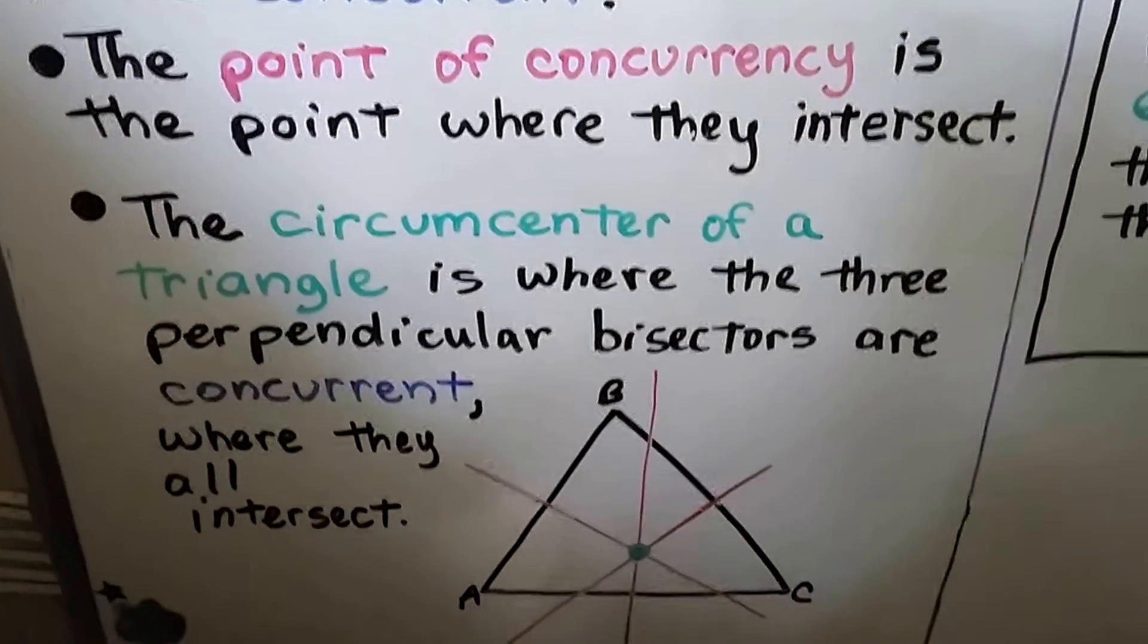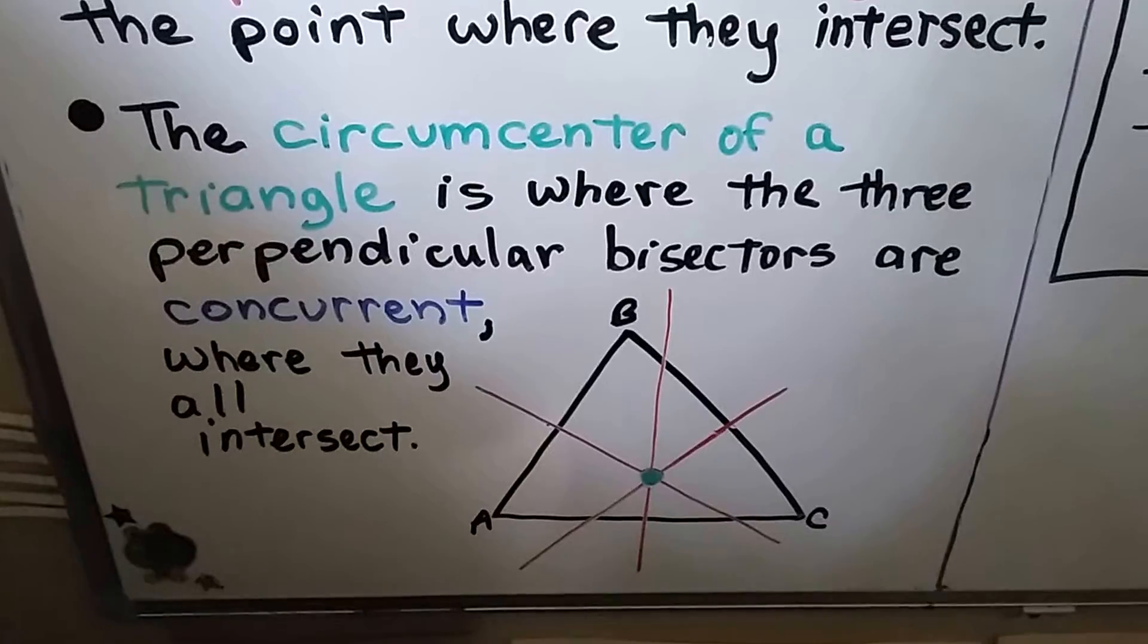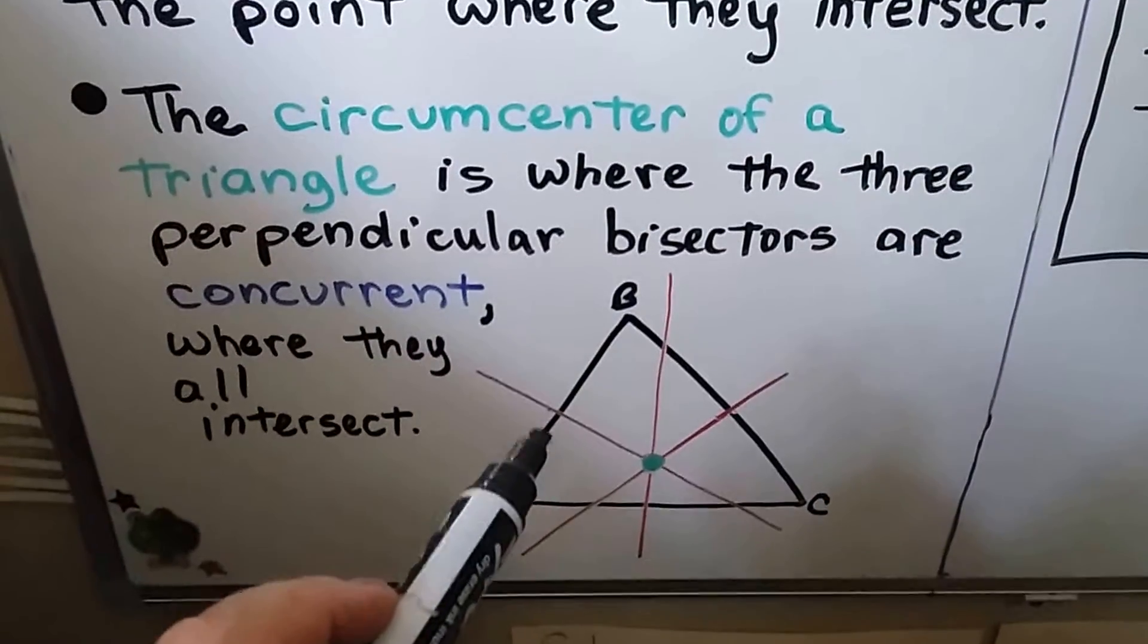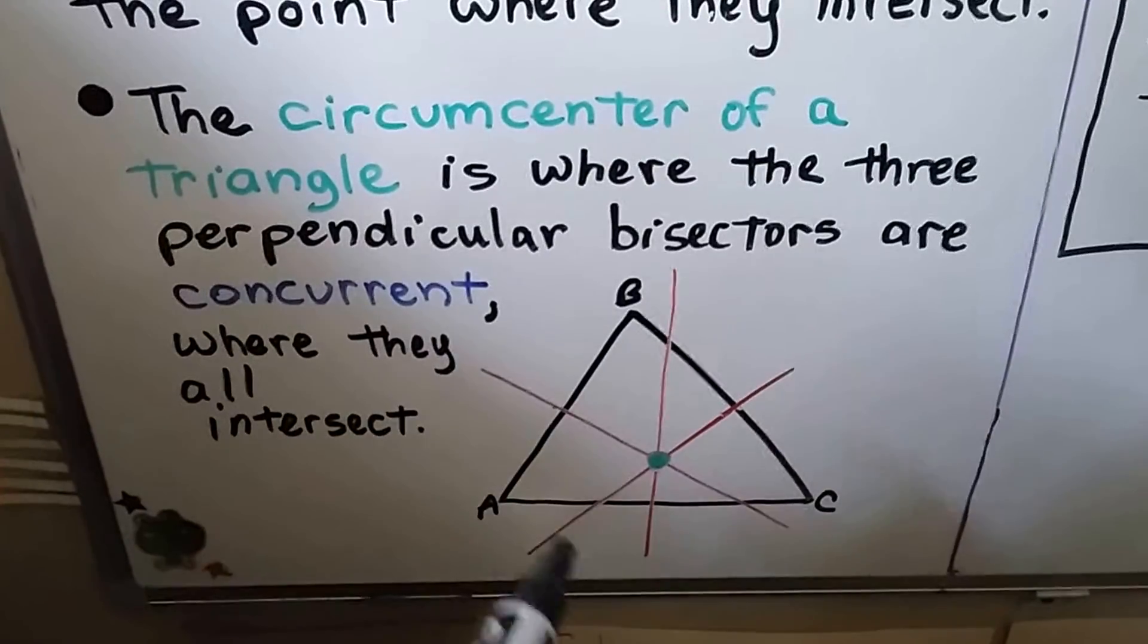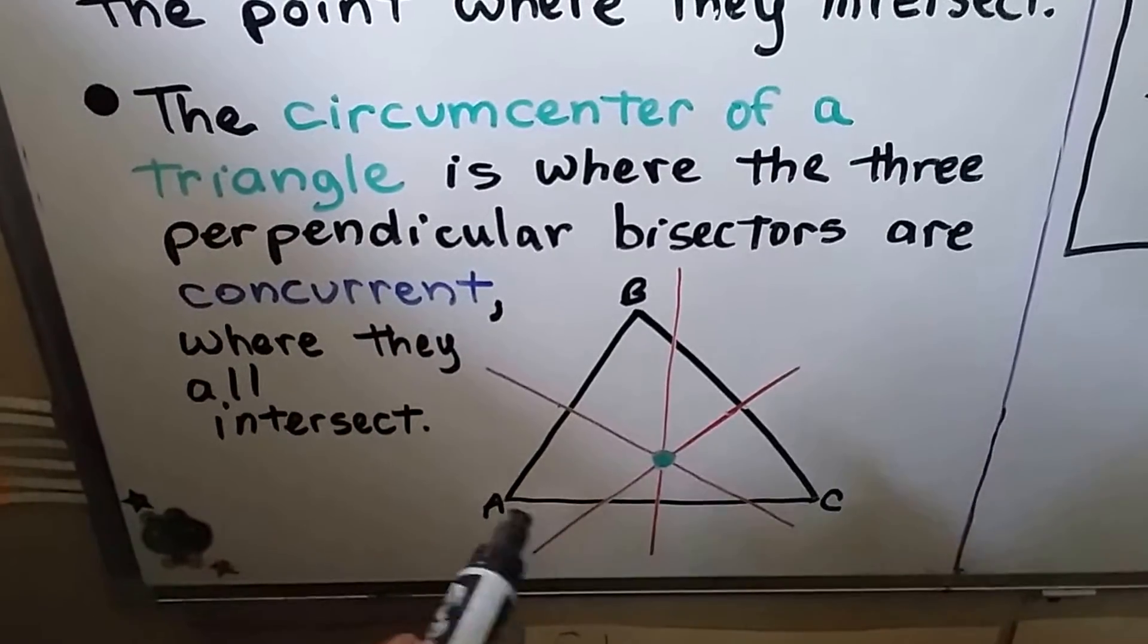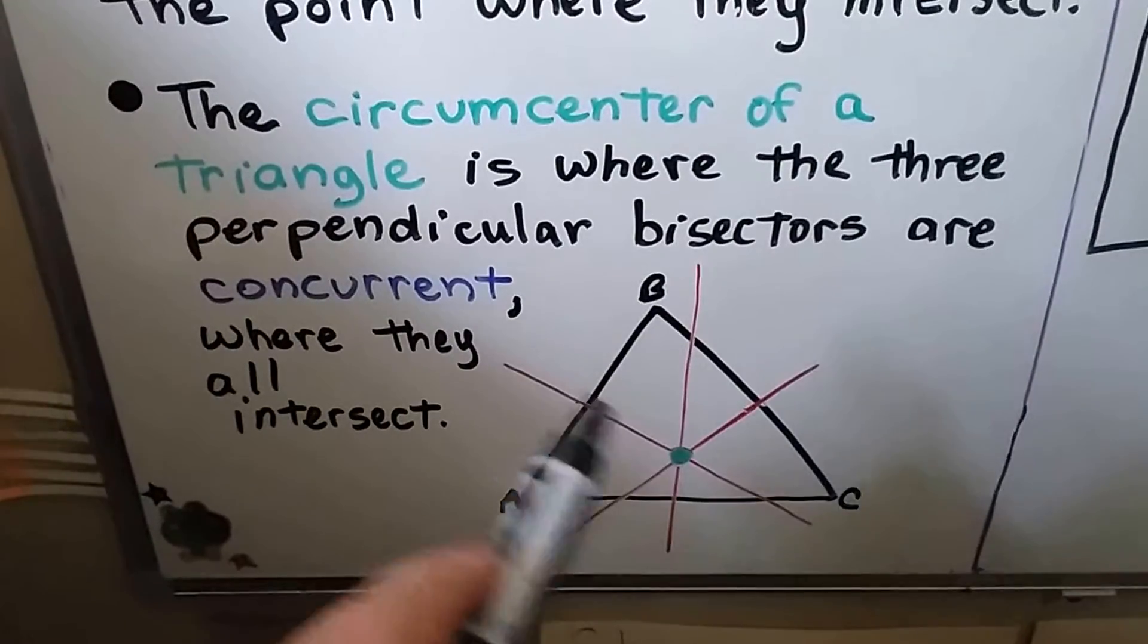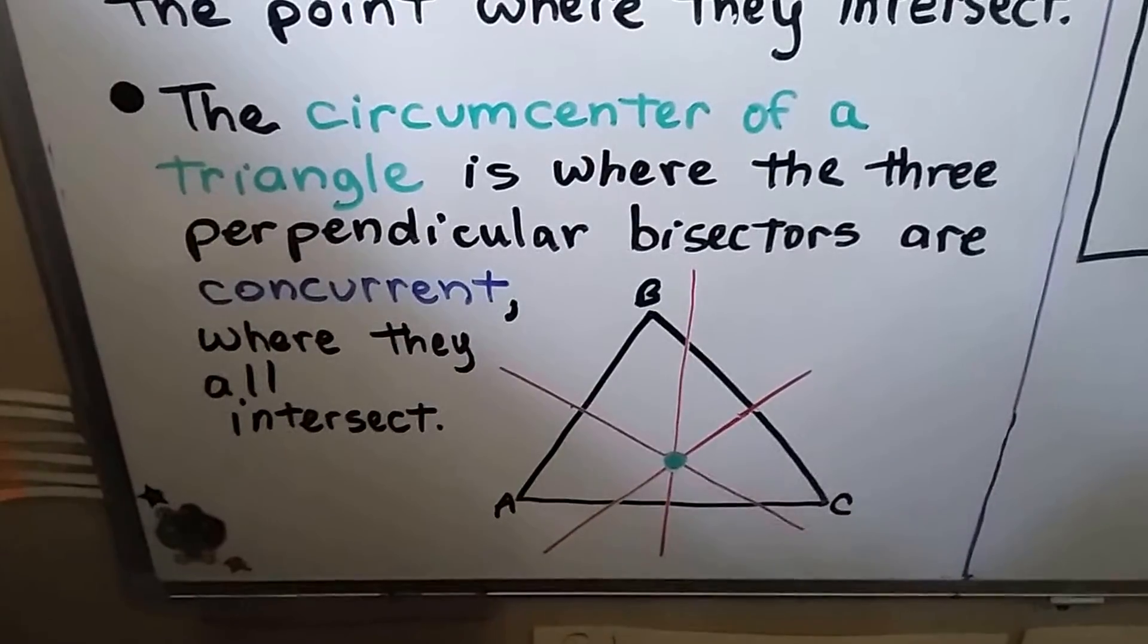The circumcenter of a triangle is where the three perpendicular bisectors are concurrent, where they all intersect. We have a perpendicular bisector for AB right here, one for AC right here, and one for BC right here. And where they intersect at this green dot is the circumcenter of a triangle.